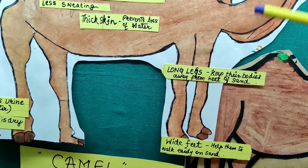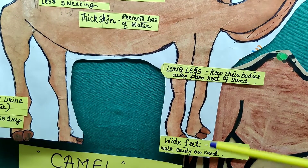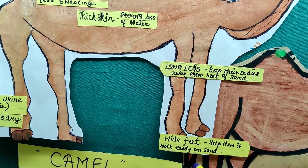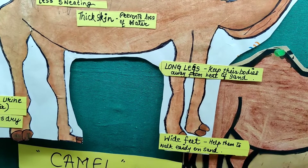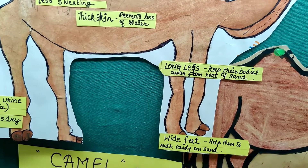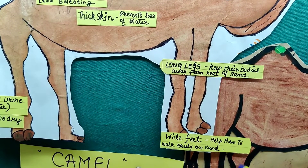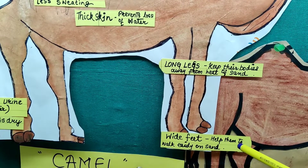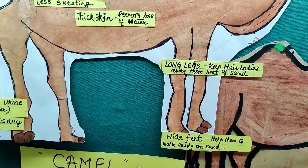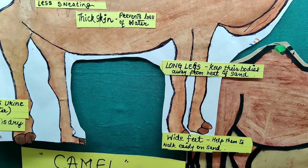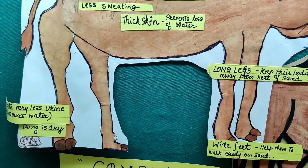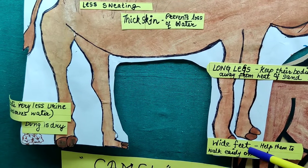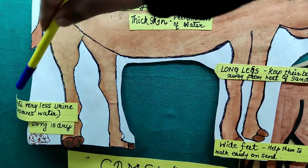Now let us focus on its leg portion. The long legs keep the body away from the sand heat — this length helps the camel stay cool. It also has wide, broad feet which help it walk easily on sand. When it comes to us humans, we would sink down into the sand, but this camel easily walks in the desert because it has broad feet.